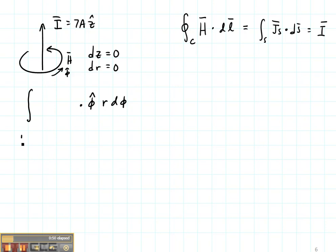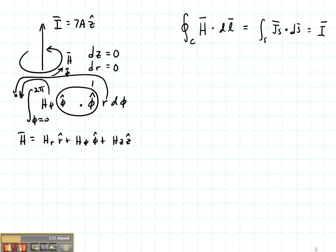So when we dot that with the magnetic field, the general form of my magnetic field is going to be HR in the R direction plus H phi in the phi direction plus HZ in the Z direction. That's in cylindrical coordinates. When I dot it, the only term that's going to be non-zero is going to be my H phi term. Then these two will dot to one and I need to do my integral as phi goes from zero to two pi.